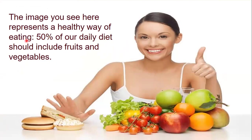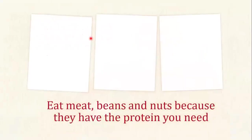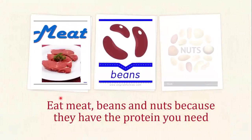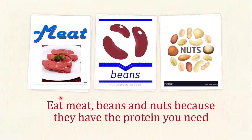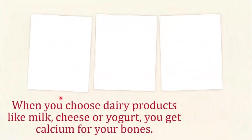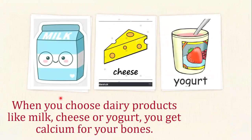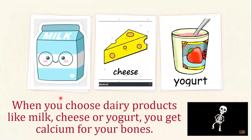El 50% of our daily diet — daily diet, aquí viene a ser una dieta diaria — should include fruits and vegetables. Eat meat, beans, and nuts because they have the protein you need. When you choose dairy products — remember, dairy is lácteos — like milk, cheese, or yogurt, you get calcium for your bones. What is bones? Those are huesos.